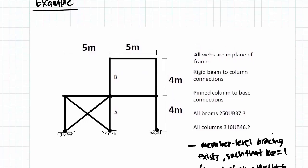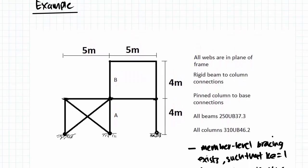So in this example what we're after is the design member capacities for these two columns A and B. The steel frame is configured such that all the webs are in plane of the frame.